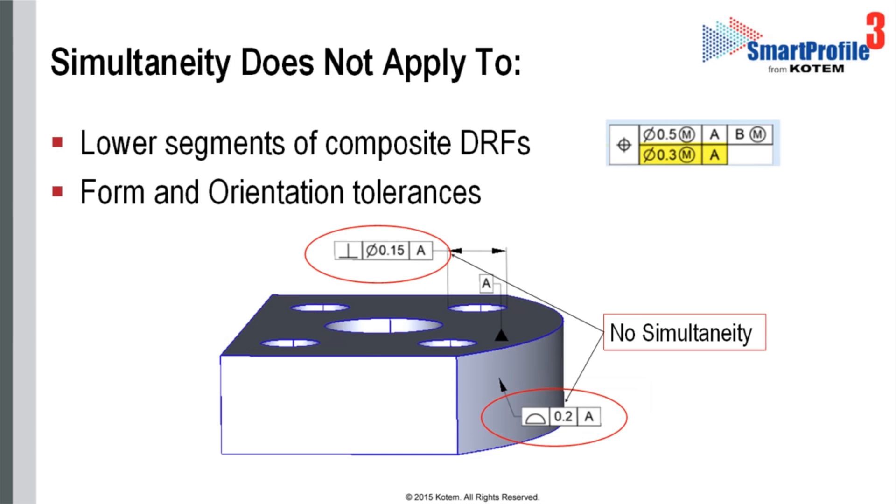which can control location and orientation. The lower segments of a feature control frame control orientation only, and simultaneity does not apply to them by default.